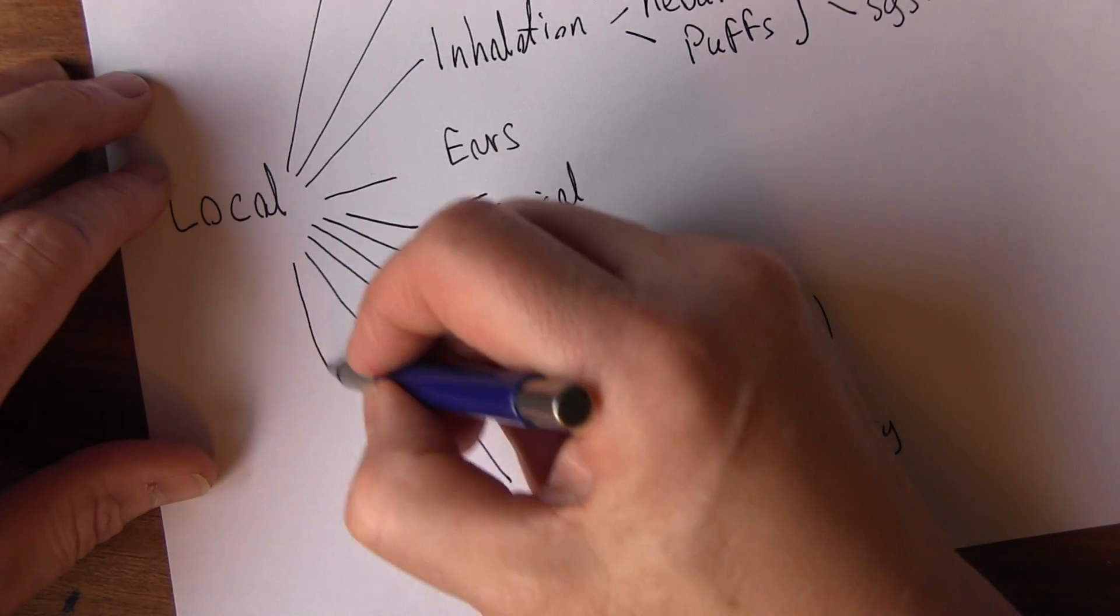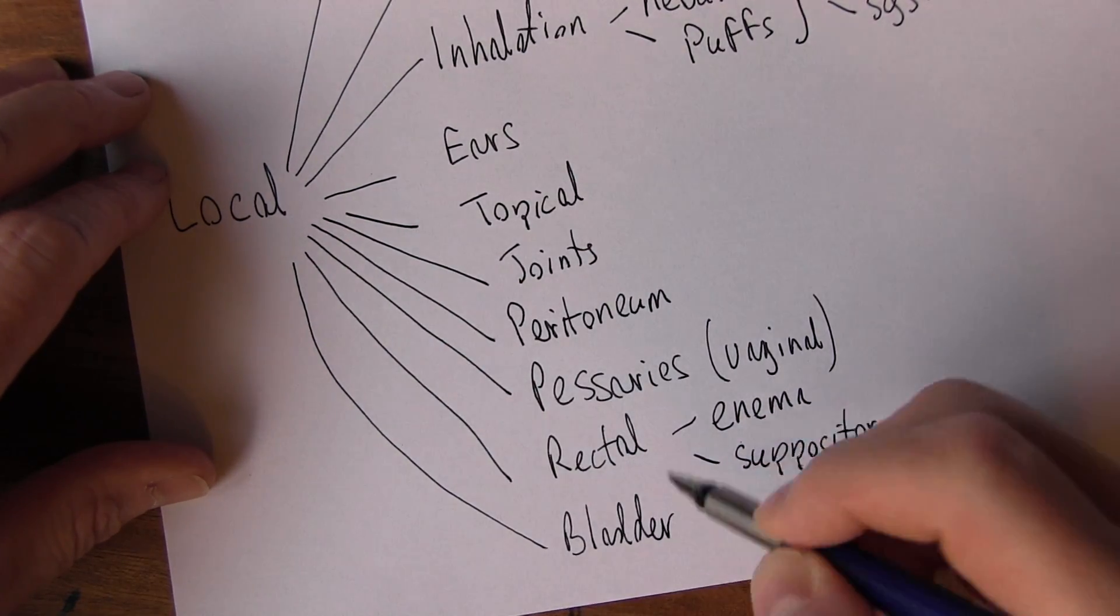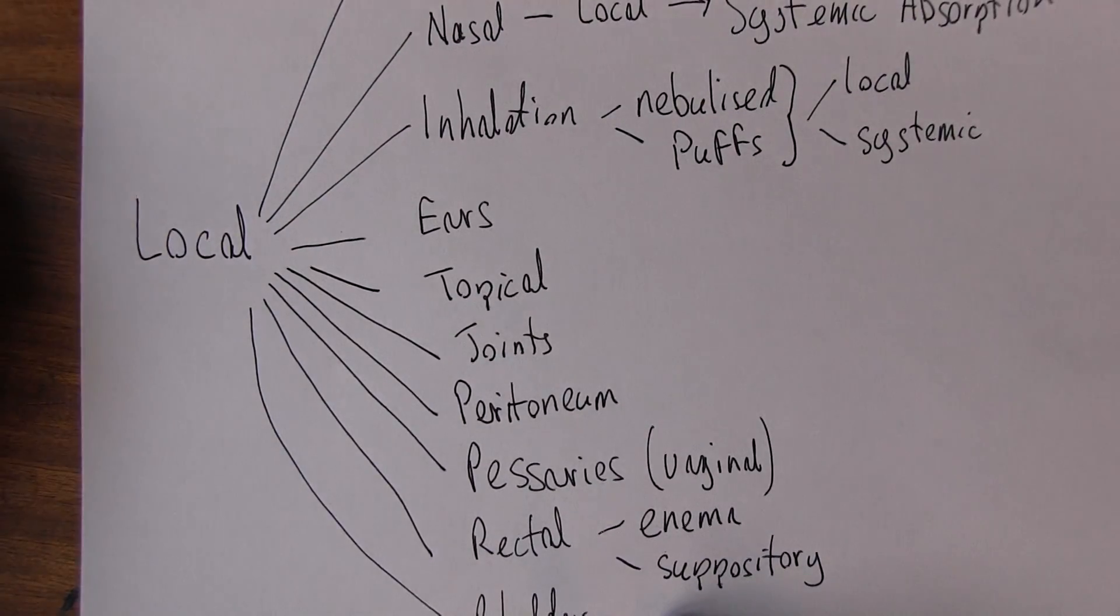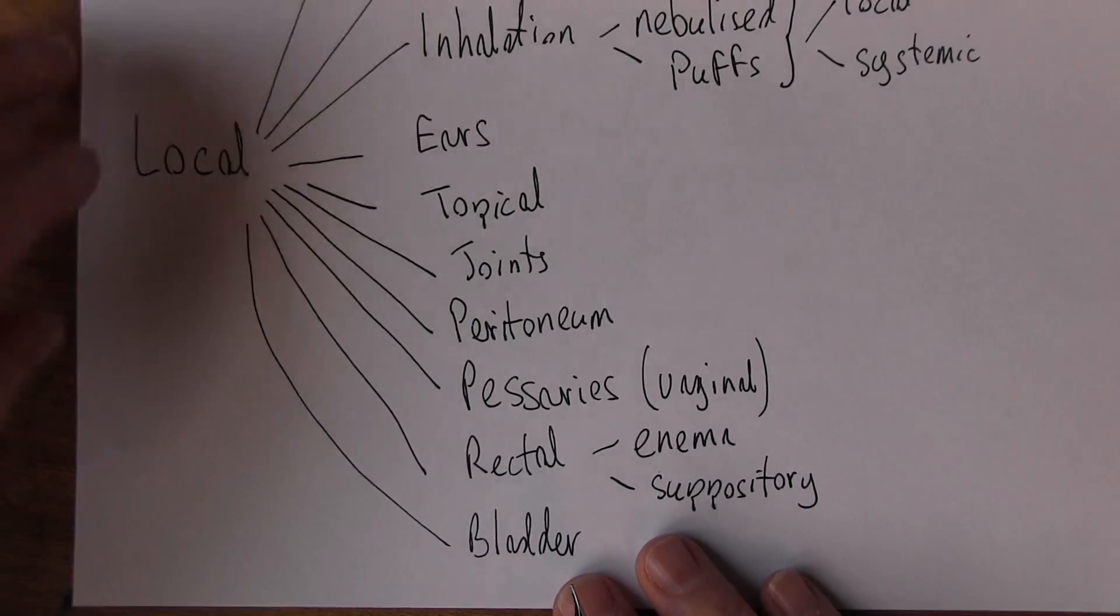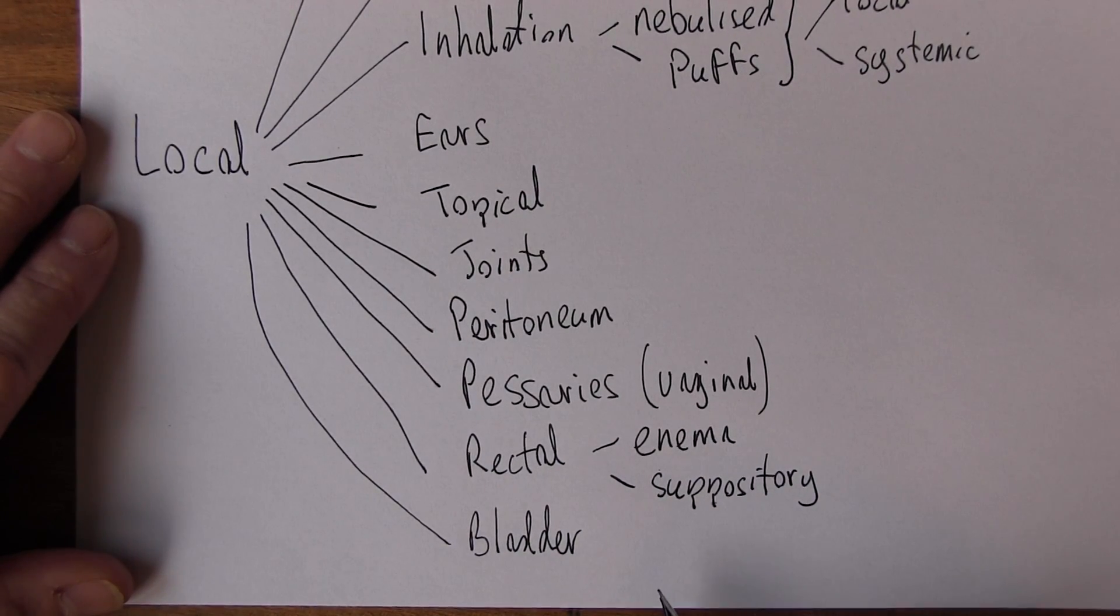And occasionally we might put drugs into the bladder if there was a catheter in situ. Perhaps antibiotics or antibacterial preparations or cytotoxic preparations if there was malignancy. Not done commonly, but we do do it sometimes.